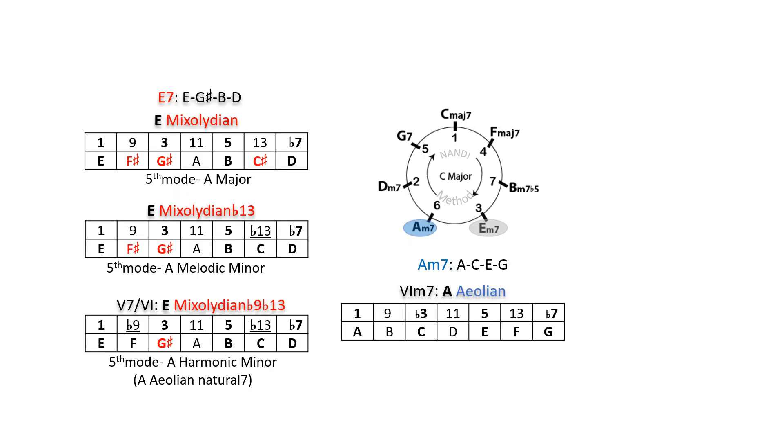E7 is the 5-7 of A minor 7. E mixolydian from A major and E mixolydian flat 13 from A melodic minor have too many uncommon tones with A eolian or C major. The closest scale to A eolian is A harmonic minor, also known as eolian natural 7. The fifth mode, E mixolydian flat 9, flat 13, is the most inside option for E7 because there's only one outside note, G sharp.